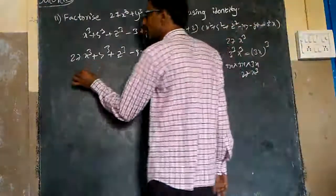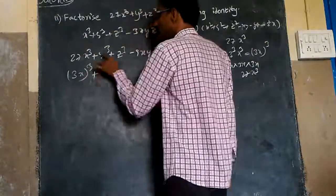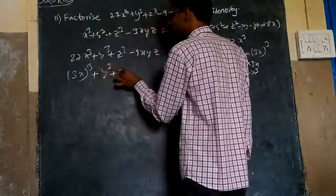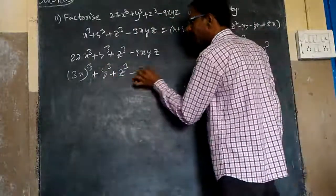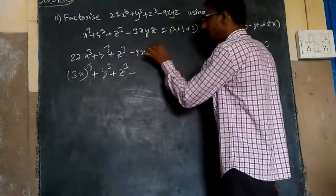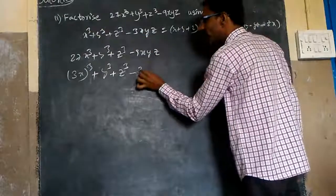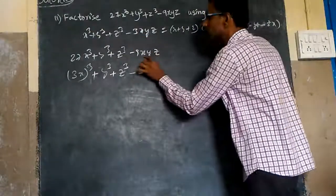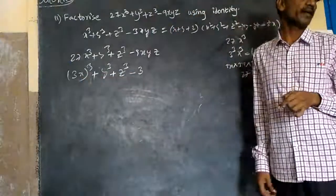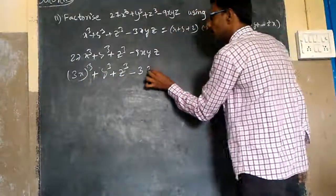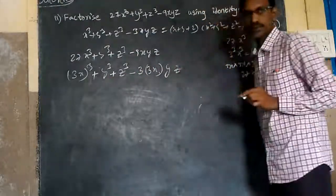So now I will write three x whole cube plus y cube plus z cube. I will write y cube and z cube as they are. Don't look at the coefficient — look at the cube terms. So what is my x? It is three x. Keep in mind: x equals three x, y is y as it is, z is z as it is.